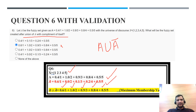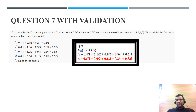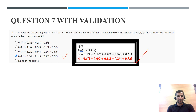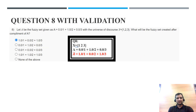Question 7: what will be the fuzzy set after complement of A? Complement of 0.4 is 0.6; complement of 1 is 0; complement of 0.9 is 0.1; complement of 0.8 is 0.2; complement of 0.5 is 0.5. The correct option is D. Note: there may be human errors, so please review carefully and don't accept answers blindly — go through in detail before submitting.